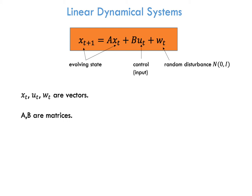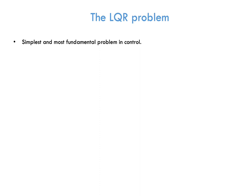We consider linear dynamical systems where there is a state that is evolving with time. The state at time t plus 1 is linear in the past state and linear in the control input at time t. There is also disturbance which is assumed to be Gaussian. This model lies at the core of control theory and has tons of applications in robotics, autonomous vehicles, data center cooling, in finance, etc.